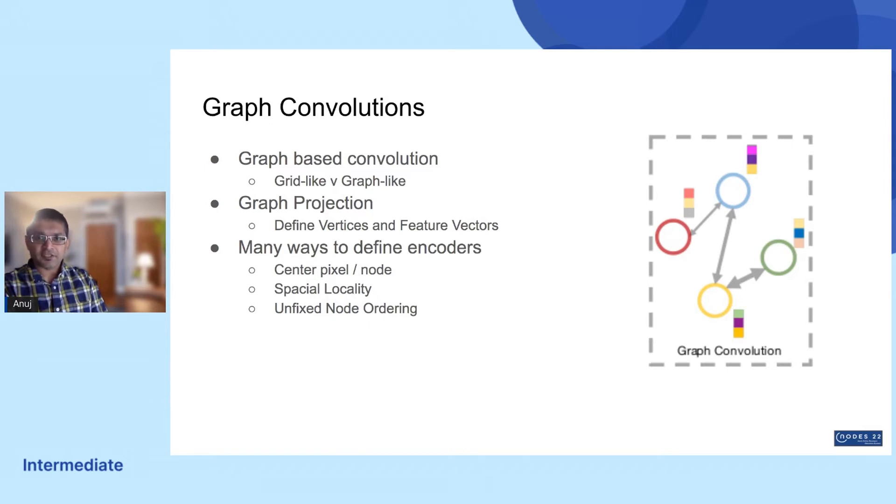Such as center pixel or node, a challenge for both grid or graph approaches when you have one pixel or node that's related to all or many others.